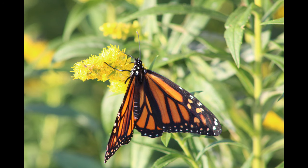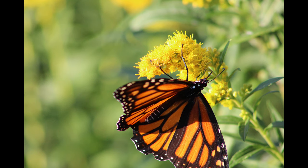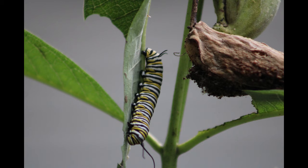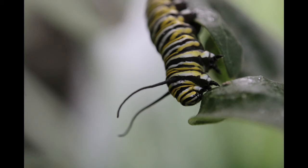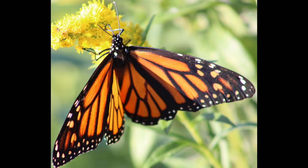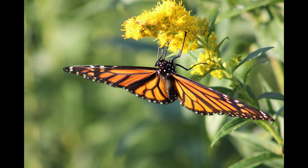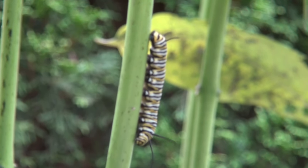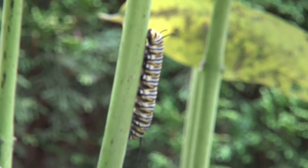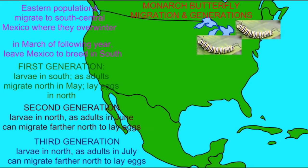These larvae or caterpillars develop in the south, and once they become adults, they migrate north around the month of May and lay their eggs in the north. This gives rise to the second generation, where larvae develop in the north and become adults around June, then migrate farther north to lay their eggs. These eggs hatch into a third generation, which become larvae in the north, then adults that can migrate even farther north.